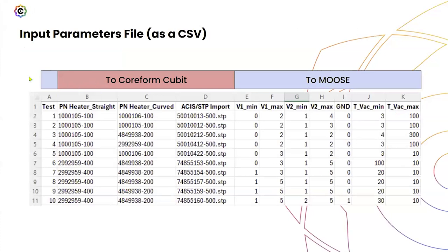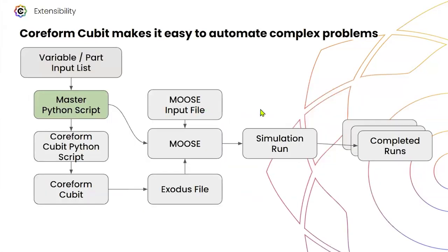This is what that looks like. This master CSV file is split into the part numbers that I'd be working with in Coreform Cubit and the import file. Then, to MOOSE, I'd be sending either single variables to sweep or using MOOSE's built-in parametric modeling system where I can set min/max values and have it sweep through those parameters. This is what that step file or CSV would look like.